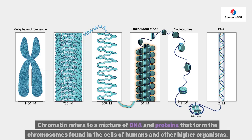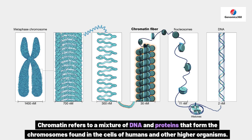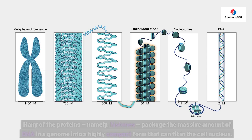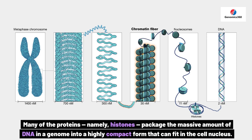Chromatin refers to a mixture of DNA and proteins that form the chromosomes found in the cells of humans and other higher organisms. Many of the proteins, namely histones, package the massive amount of DNA in a genome into a highly compact form that can fit in the cell nucleus.